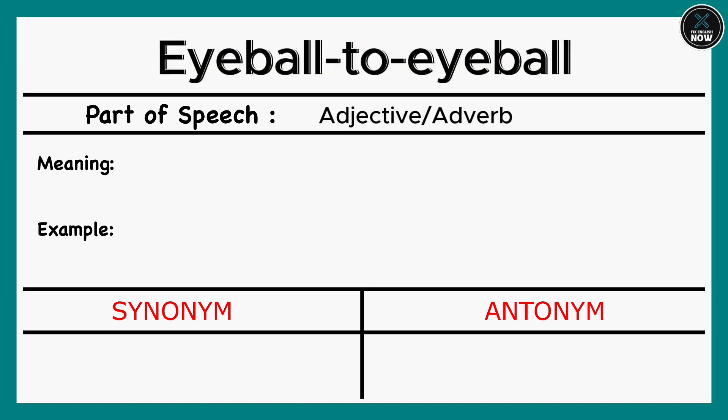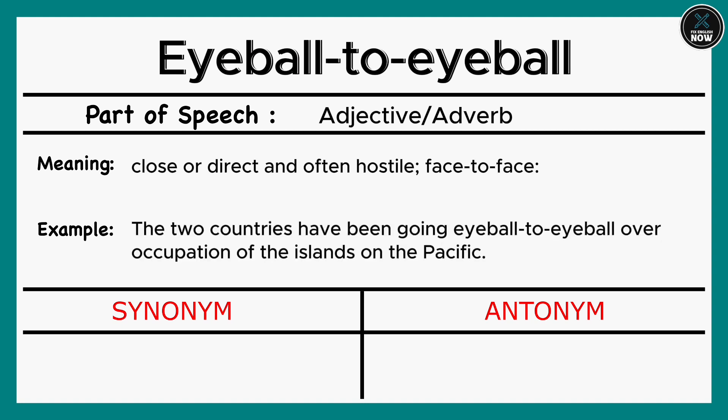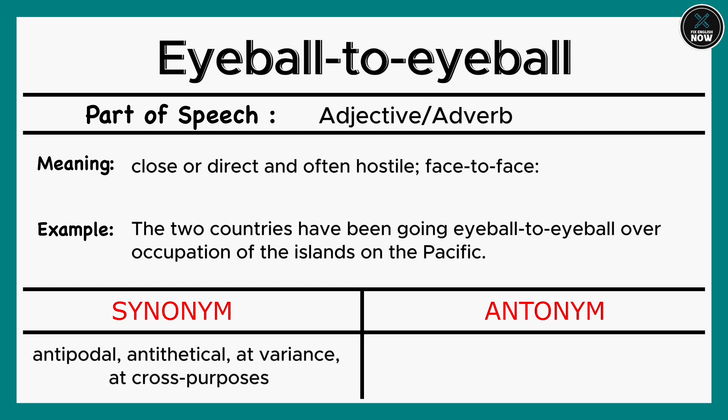Eyeball to eyeball: Close or direct and often hostile, face-to-face. Example: The two countries have been going eyeball-to-eyeball over occupation of the islands on the Pacific. Synonyms: Antipodal, Antithetical, At variance, At cross-purposes. Antonyms: On the same page, Agreed.